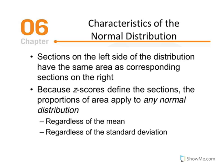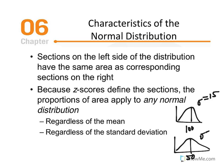To review the characteristics of the normal distribution: sections on the left side have the same area as corresponding sections on the right. Because it's symmetrical, this is the case regardless of the distribution we're working with — as long as it's normally distributed, the sections are equivalent on both sides. The proportions of area apply to any normal distribution, regardless of the mean or standard deviation. Whether the mean is 100 with a standard deviation of 15, or the mean is 50 with a standard deviation of 25, as long as it's normal, we can utilize the unit normal table and probability concepts to draw conclusions.